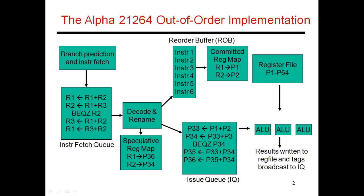When does the instruction fetch stage get stalled? The outputs of the instruction fetch stage get placed in the instruction fetch queue, which might have, say, 16 entries. Once all 16 entries are consumed, the instruction fetch stage has to stall because there's nowhere to put the outputs. Then instructions move into the decode stage, which stalls when its destinations — the reorder buffer and the issue queue — end up getting full.